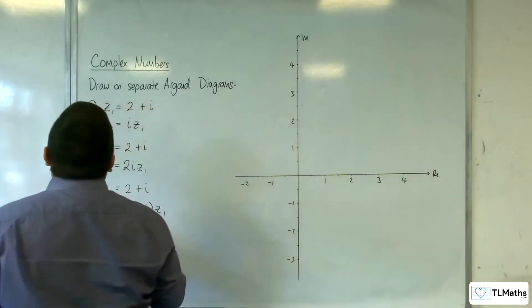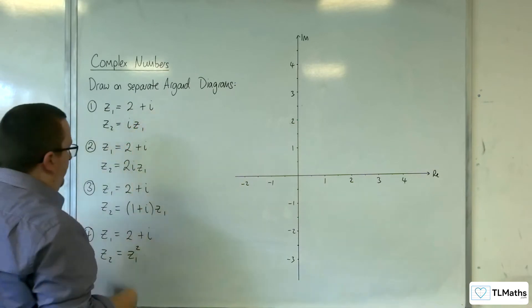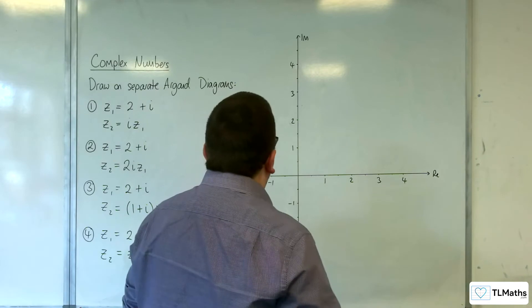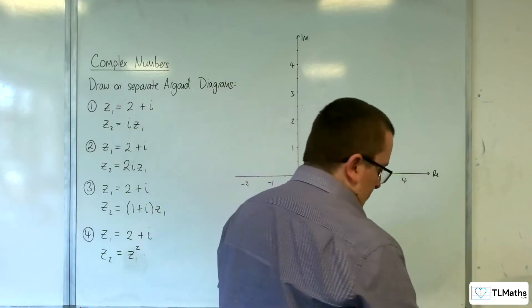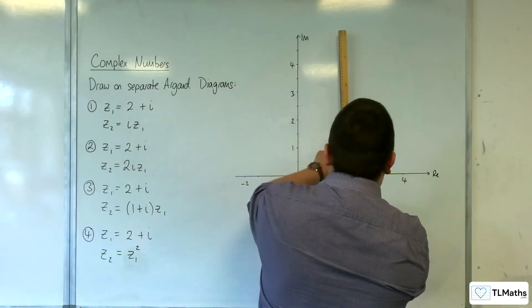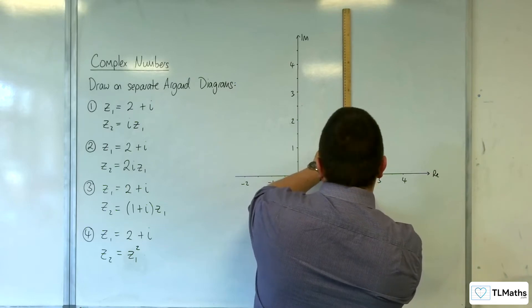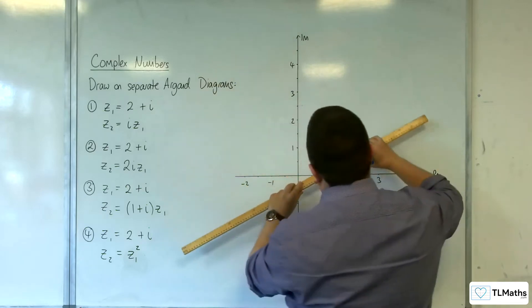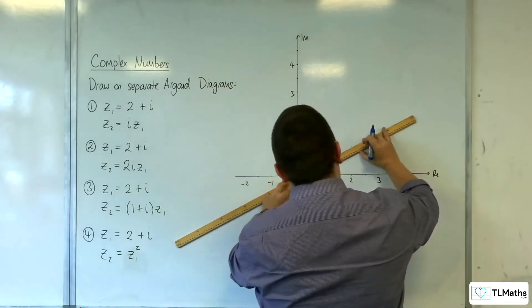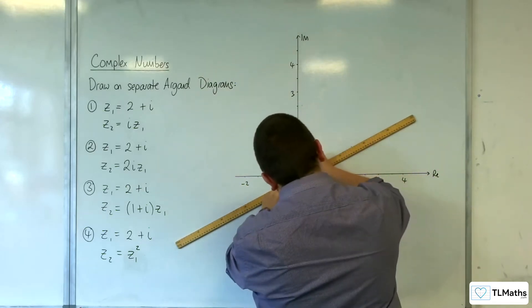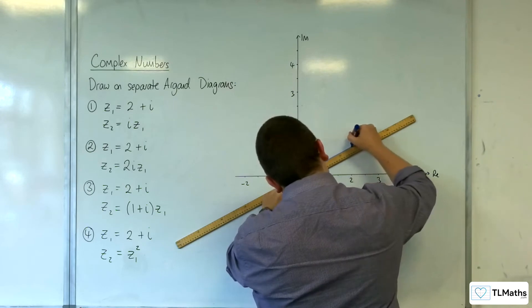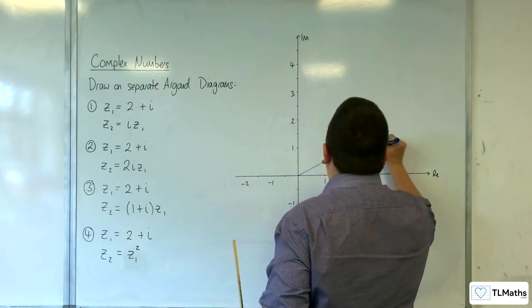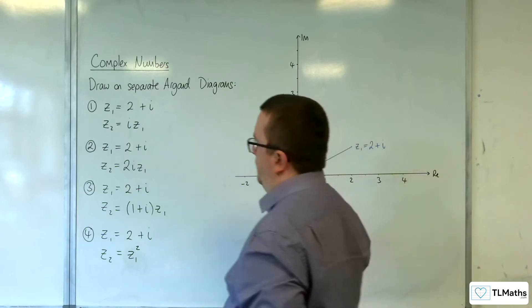Let's say we've got this complex number 2 plus i, and I'm going to use it in all four examples to investigate what's going on. I'm going to try and be relatively accurate on this big board. So here is z₁, 2 plus i.